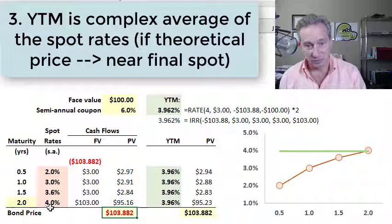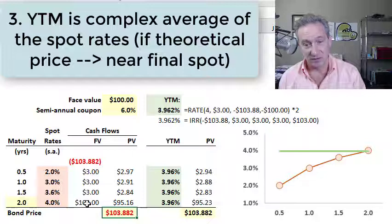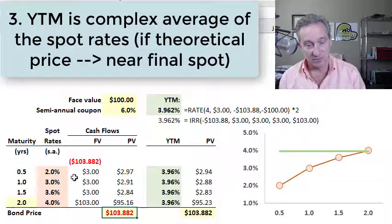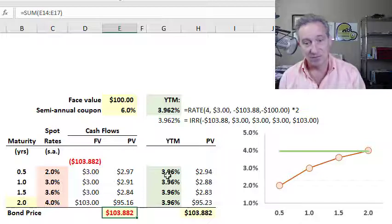In fact, it's nearest to the spot rate associated with where most of the cash flow is — that's the final cash flow. So the yield is a complex weighted average of the spot rates.